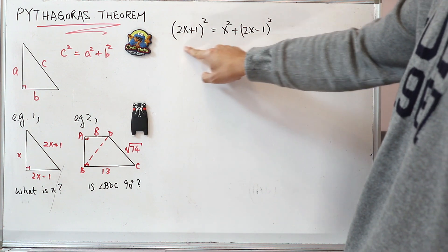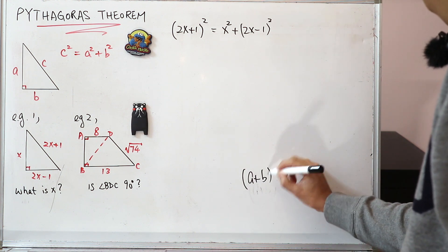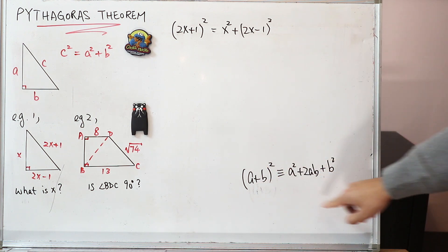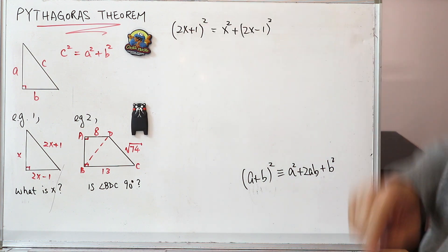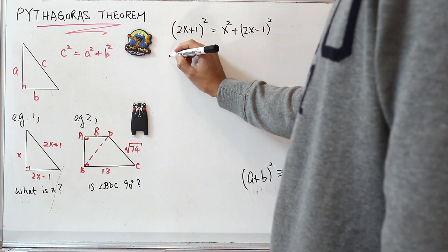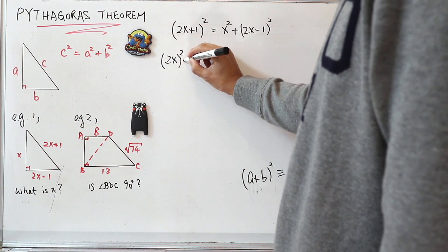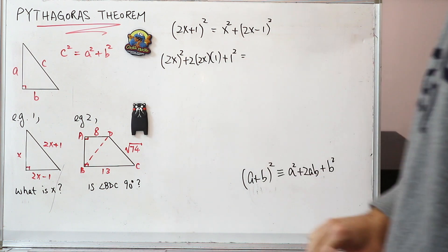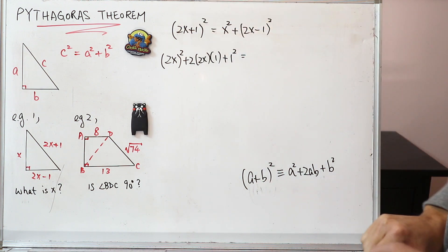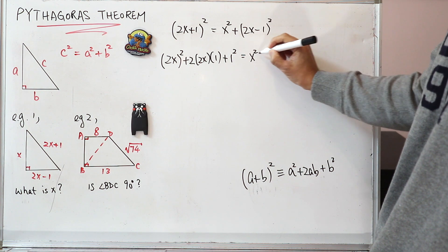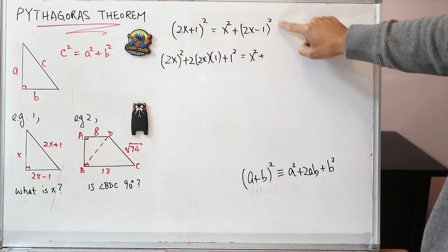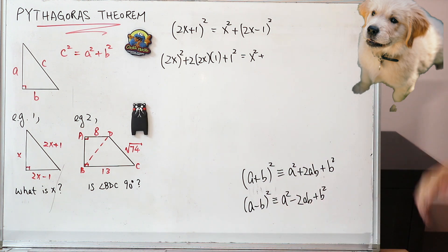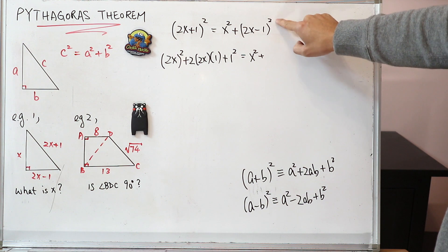So how do I expand this bracket? You need to know the identity. You have to know that (a plus b) squared equals this. So by applying this identity, I can expand this immediately. The left-hand side bracket squared becomes (2x) squared plus 2 times 2x times 1 plus 1 squared. For the right-hand side, we have x squared plus this bracket squared, and for that you need to know the identity (a minus b) squared, which is this one. So by using this identity, I expand (2x minus 1) squared.